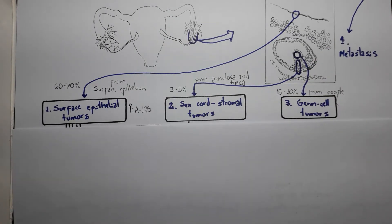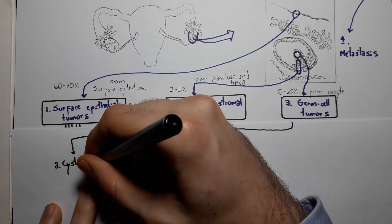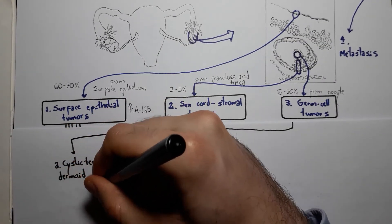Finally, we get to the germ cell tumors. Here again, we have five different kinds of germ cell tumors. Germ cell tumors are particularly common in reproductive age women.